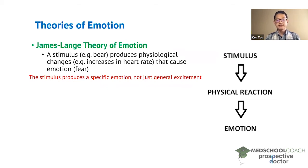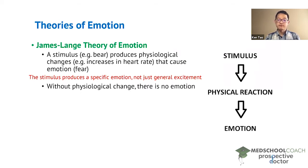The James-Lange theory of emotion also states that a different set of physiological changes is required to produce each specific emotion. So that means without physiological change there is no emotion.